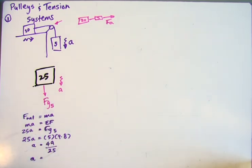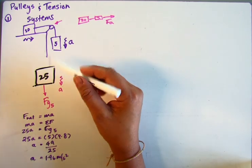In this case, A equals 1.96 meters per second squared. That tells us what the acceleration of the system is.